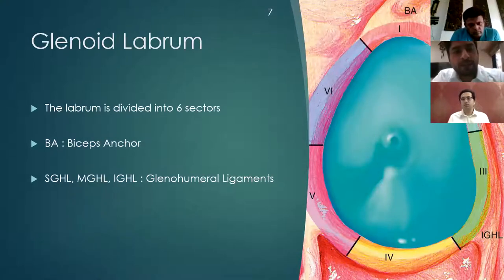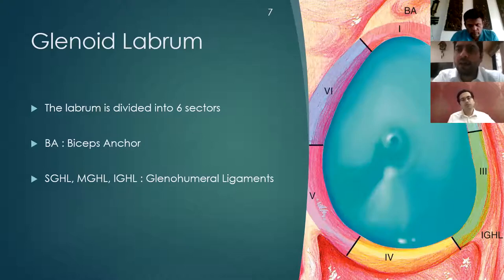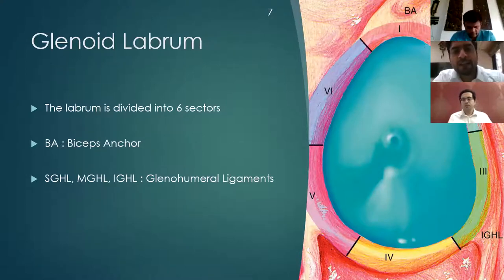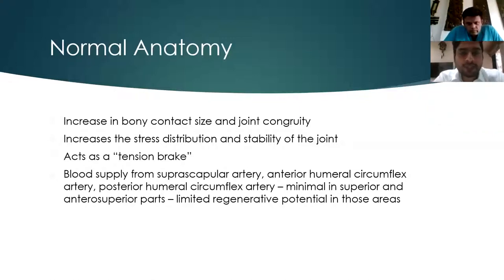The labrum is partly collagenous and partly cartilaginous, inserted into the scapular neck. It covers the glenoid cavity and forms a functional unit with the capsule, the long head of the biceps, the long head of the triceps, and the glenohumeral ligaments. The labrum is divided into six sectors: the superior, antero-superior, anterior, inferior, posterior inferior, and posterior superior sectors, which give attachment to the glenohumeral ligaments, biceps tendons, and capsular attachments. The glenoid labrum increases bony contact size, joint congruity, stress distribution, and stability, and acts as a tension break.